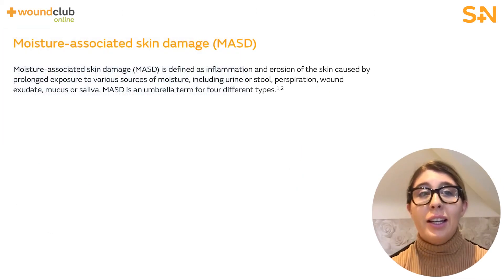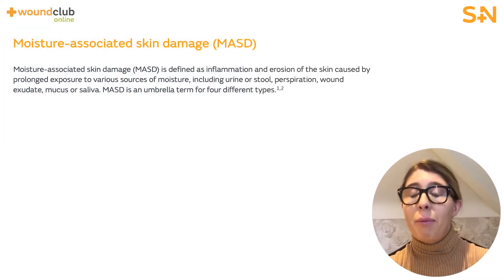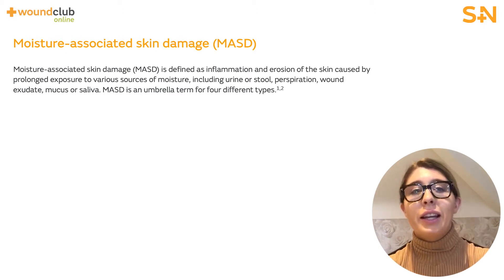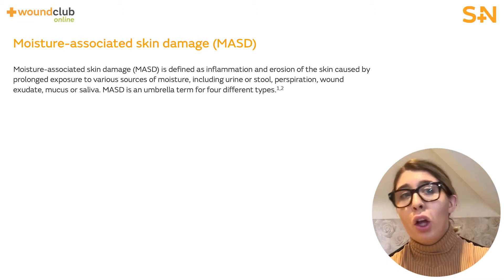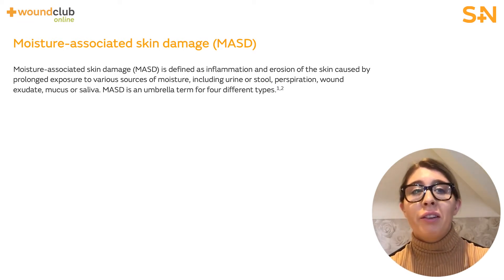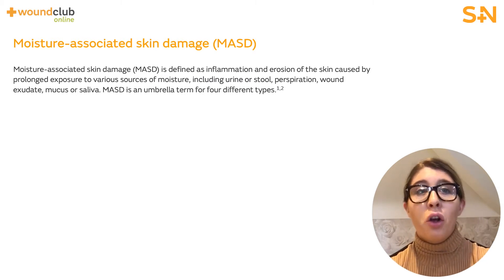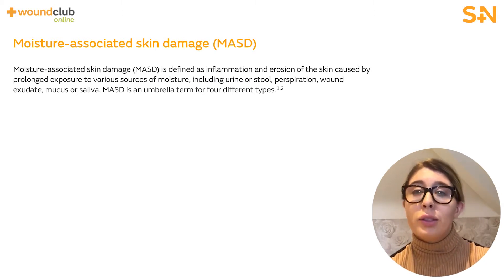Firstly, let's recap on what the four types of MASD are. MASD is defined as the inflammation and erosion of the skin caused by prolonged exposure to various sources of moisture. That includes urine, stool, perspiration, wound exudate, mucus, or saliva.